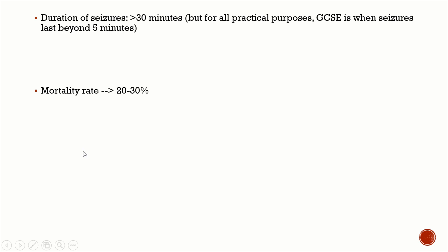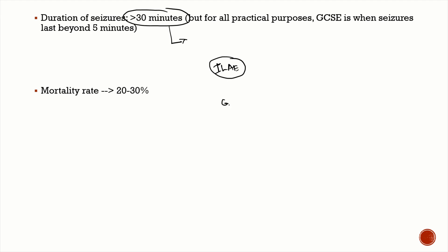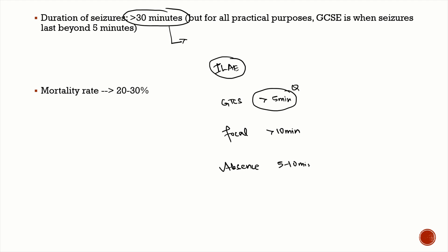What is the duration of seizures to say that the patient is in status epilepticus? The old definition was more than 30 minutes, because permanent neurological deficits usually occur after 30 minutes of continuous seizures. However, as per the International League Against Epilepsy — very important MCQ — for generalized tonic-clonic seizures, it's when they last for more than 5 minutes; focal seizures lasting more than 10 minutes; and absence seizures lasting 5 to 10 minutes.